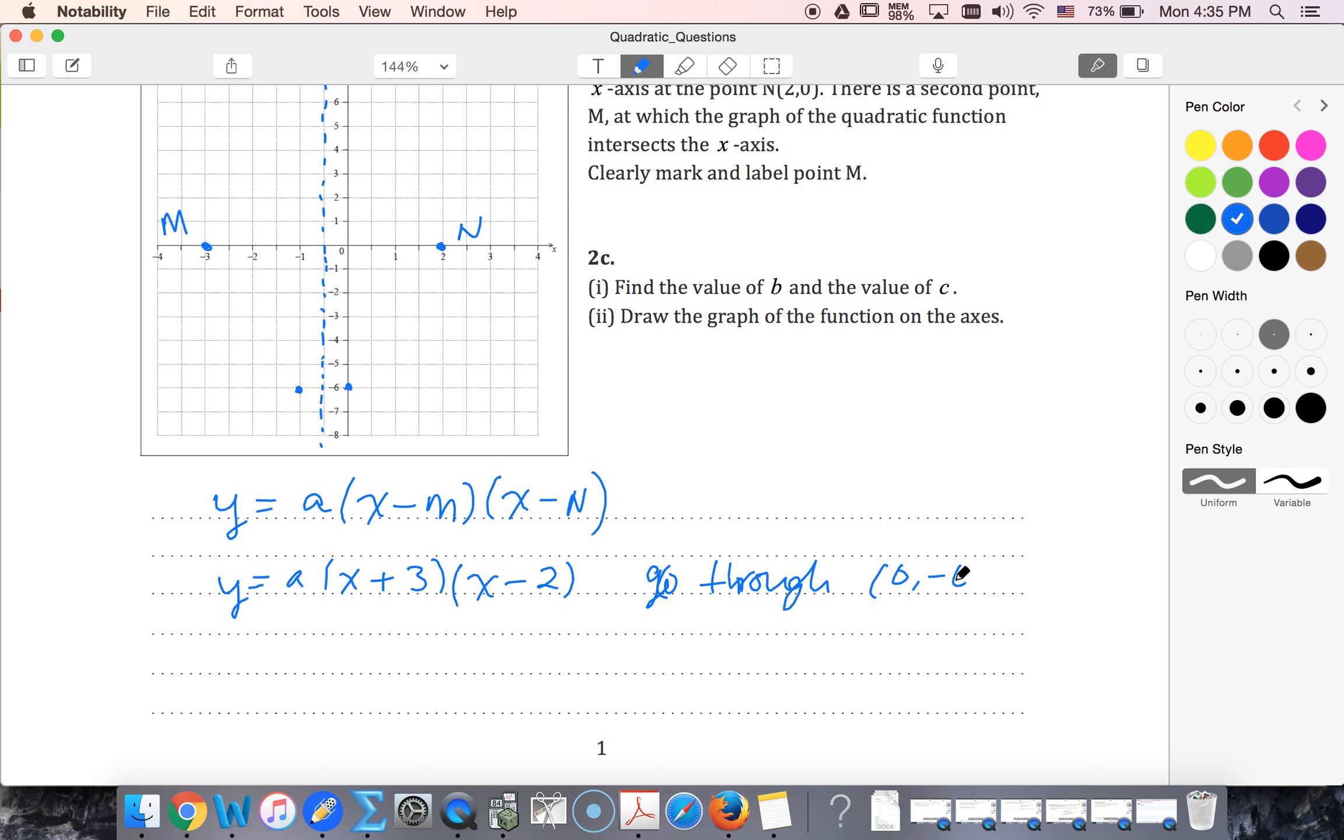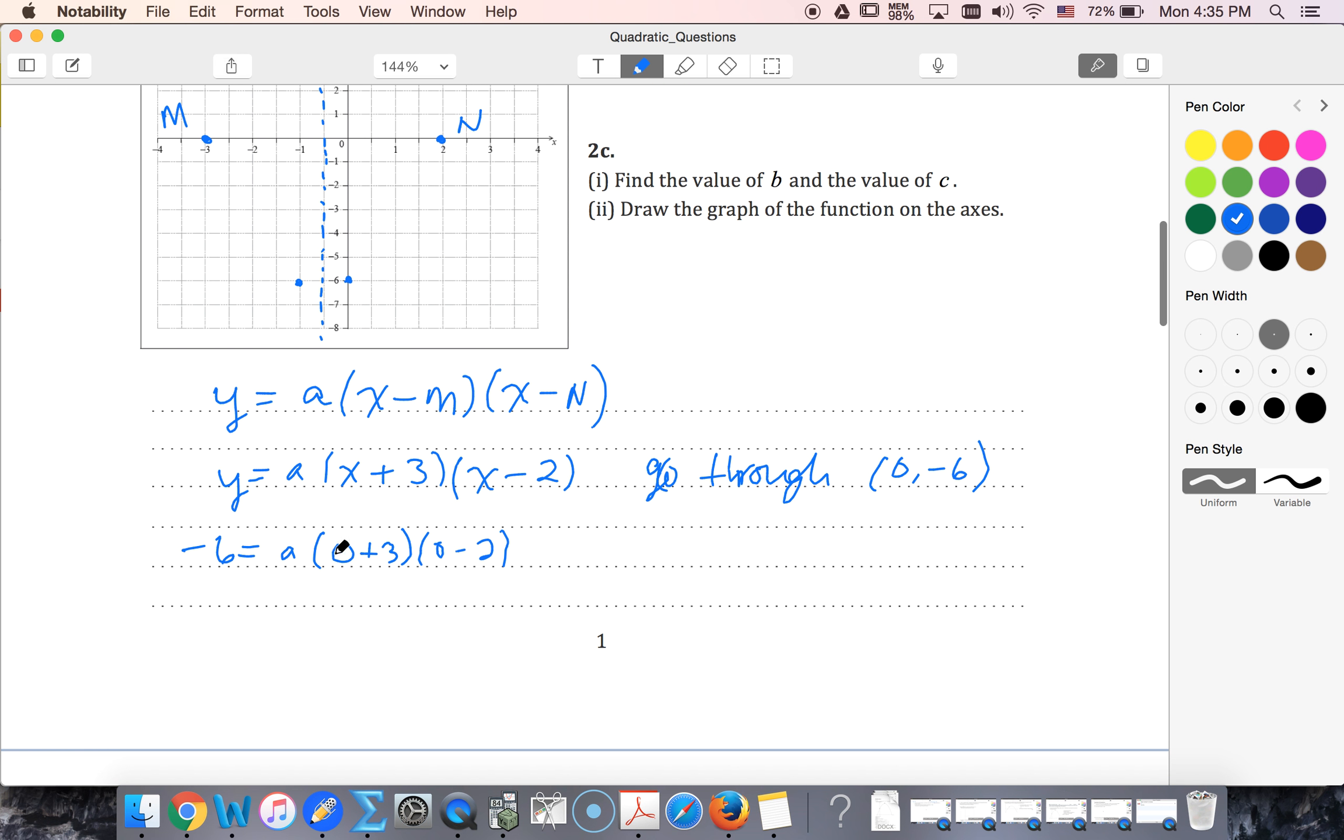I go through zero, negative six, so I can use that the y value is negative six when my x value is zero. Alright, zero plus three is three, zero minus two is negative two, so three times negative two is negative six. That must mean my a value is one. So now my equation is just going to be x plus three times x minus two.